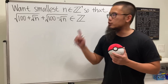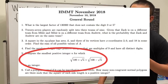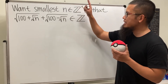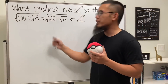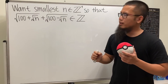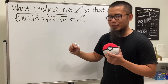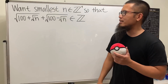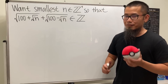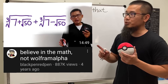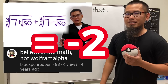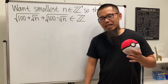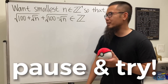Let's do this one for fun. Here is a question from the Harvard-MIT math competition: we are going to find the smallest positive integer n so that this expression — which involves square roots — is an integer. We have actually done a video on the cube root situation like this, so we have a pretty good hope with this one.